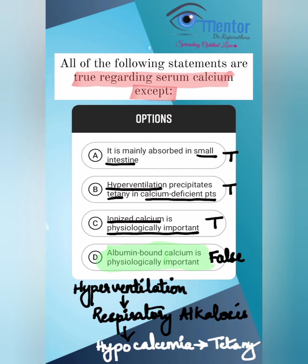How does hyperventilation cause tetany and laryngospasm? Hyperventilation causes respiratory alkalosis, and thereby hypocalcemia, and therefore tetany and laryngospasm.